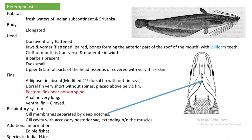The next fish is Heteronistus. Its habitat is freshwater and it can be found in the Indian subcontinent. The body is elongated. The head is dorso-ventrally flattened, meaning it is compressed from the dorsal and ventral sides.